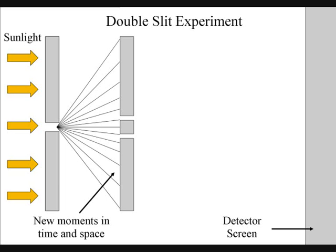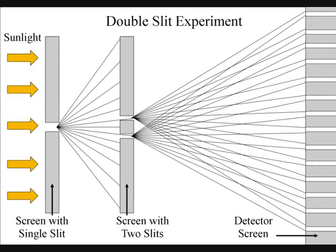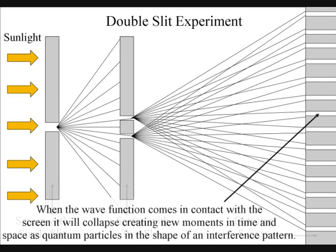This will collapse the wave-particle duality of the light, creating new moments in time and new quantum particles in space. The part of the wave that does not come in contact with the screen will expand in all possible routes, going through both slits. When this wave-particle function comes in contact with the screen, it will collapse, creating moments in time and quantum particles in the shape of an interference pattern.